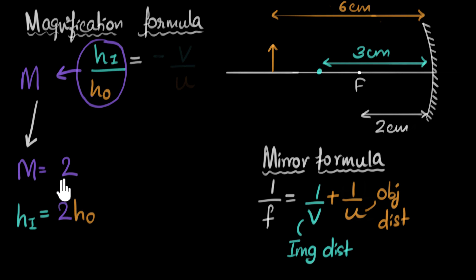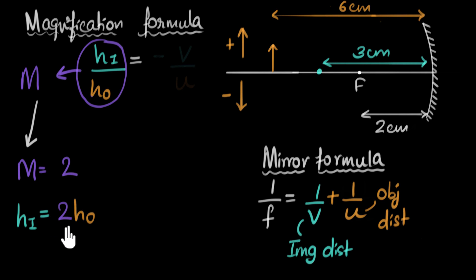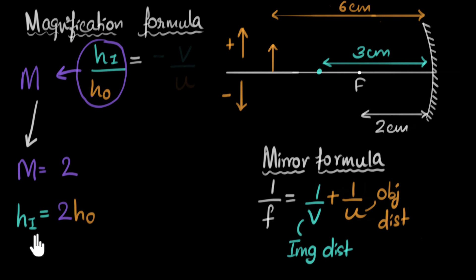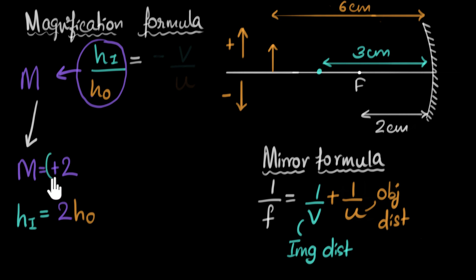Now, magnification is sign-sensitive. When it comes to height, we take above the principal axis as positive and below as negative. So when m equals two, the image height and object height have the same sign — meaning the same orientation. In other words, the image is erect, and we know that an erect image is always a virtual image. So a positive magnification tells us the image is virtual.